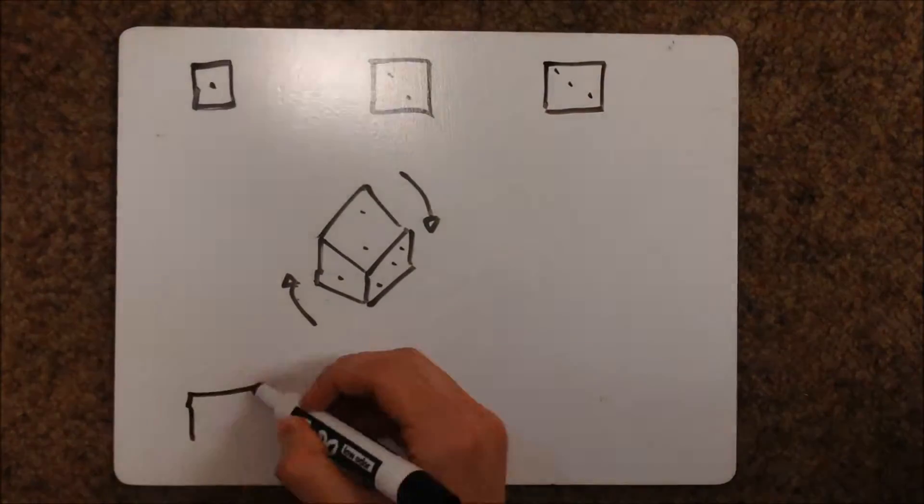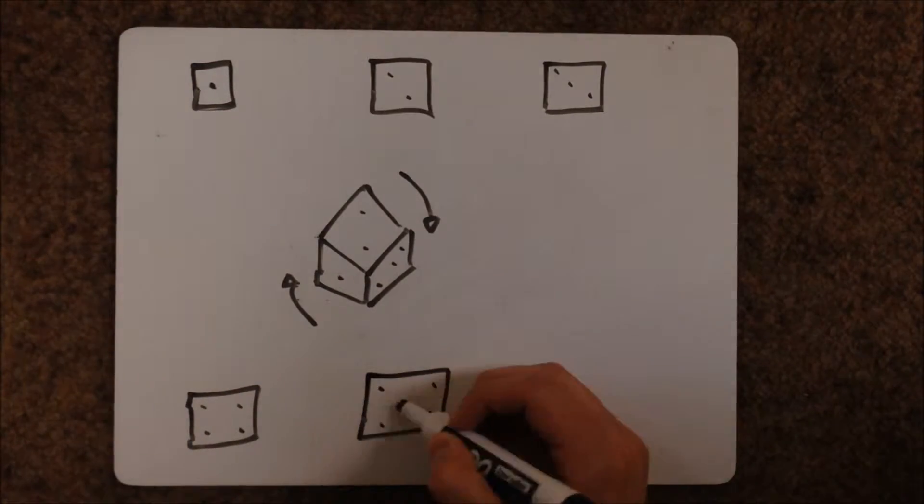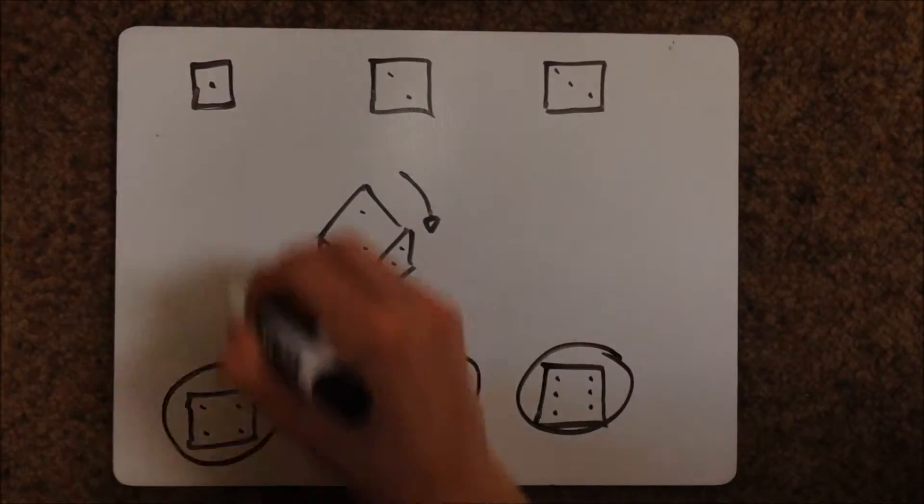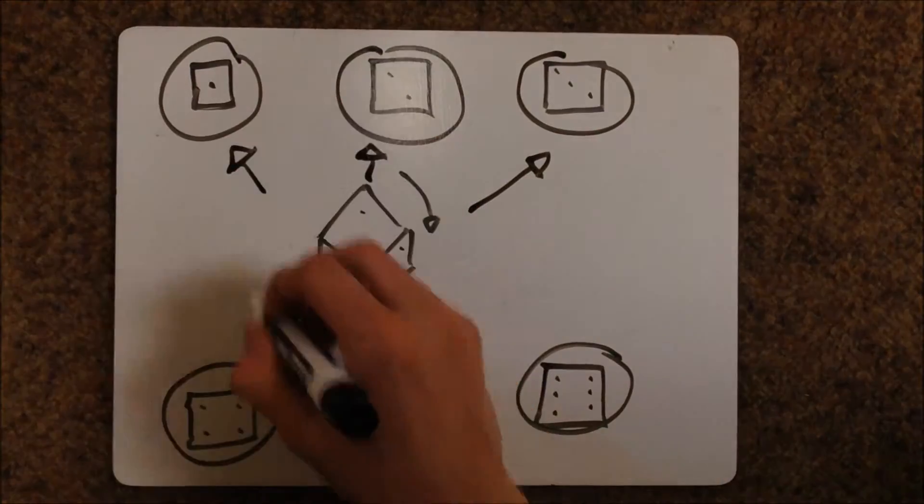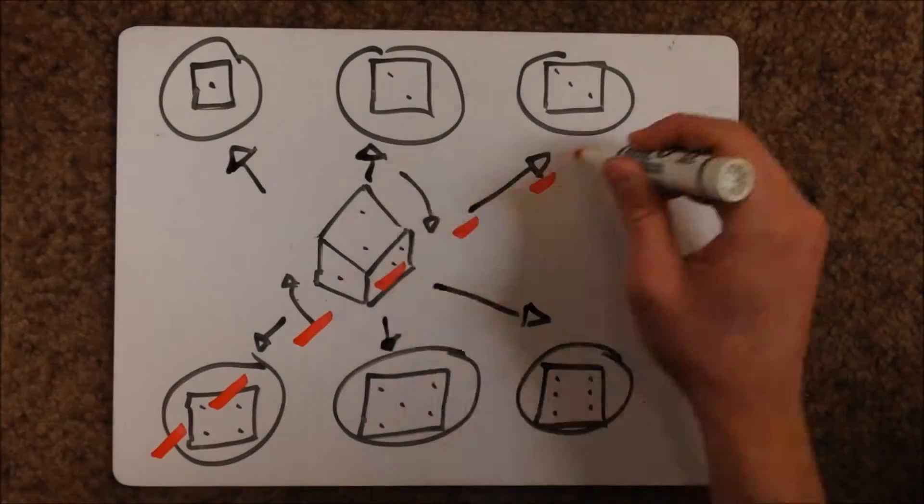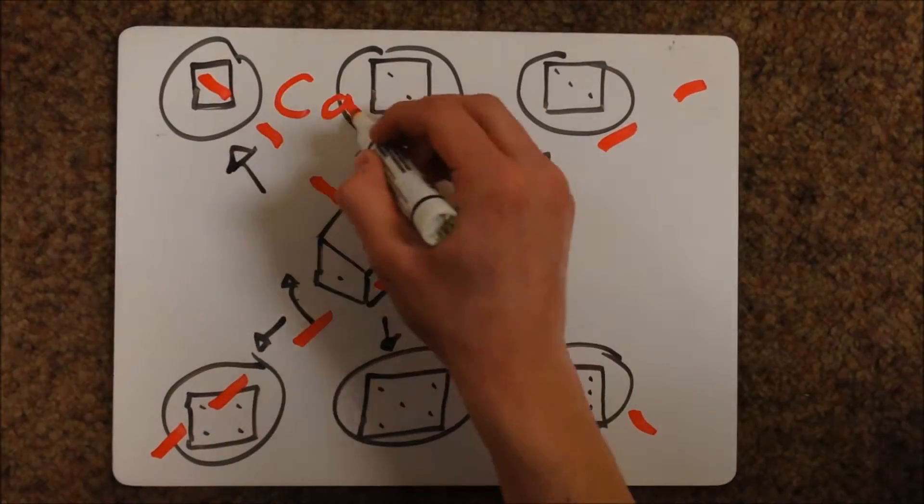For example, suppose you roll a die and the number one comes up. The many worlds theory suggests that each other possibility is realized in its own individual timeline. Again, this is just a theory which cannot be experimentally proven.